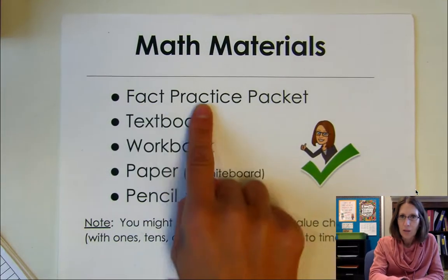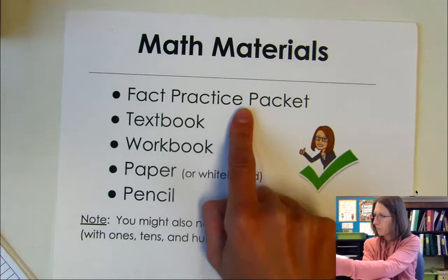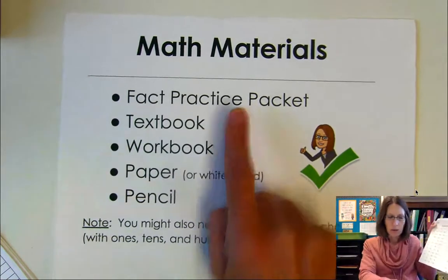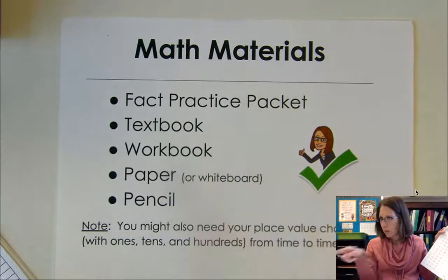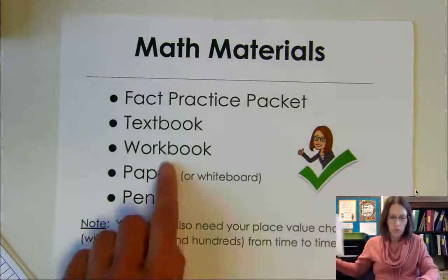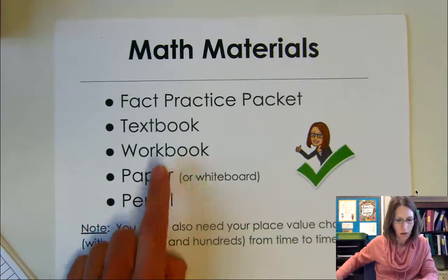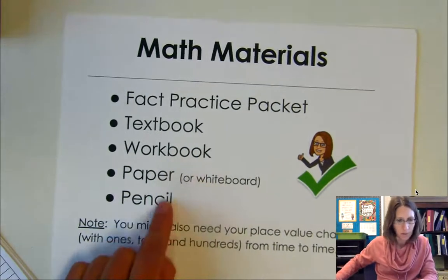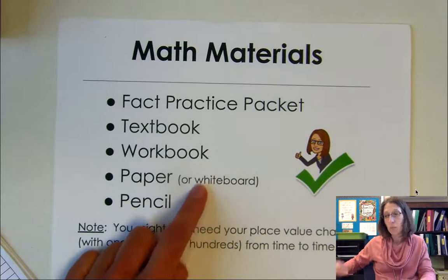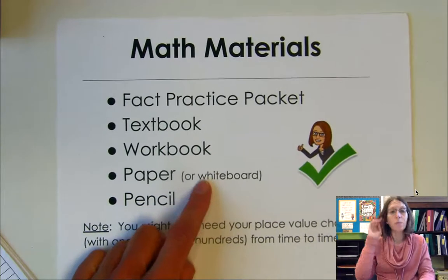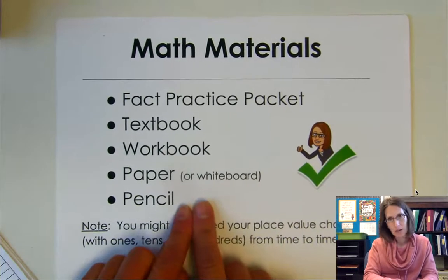Do we have our fact practice packet? I've got mine. Here it is. Do you have your textbook? Got mine over there. There it is - my textbook. Do you have your workbook? There's mine. Paper or whiteboard and a pencil - I need a pencil. I'm going to do a little bit of work today on my whiteboard, so you might want to get your whiteboard. If you need any of these things, please pause the video and go and get them and come right back.